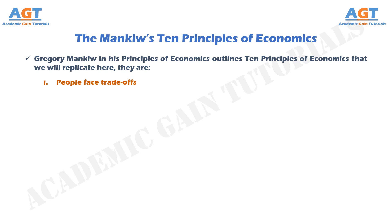Principle No. 2: The cost of something is what you give up to get it. Because people face trade-offs, making decisions requires comparing the costs and benefits of alternative courses of action. In many cases, the cost of some action is not as obvious as it might first appear. The opportunity cost of an item is what you give up to get that item. When making any decision, such as whether to attend college, decision makers should be aware of the opportunity costs that accompany each possible action. College-age athletes who can earn millions if they drop out of school and play professional sports are well aware that their opportunity cost of college is very high. It is not surprising that they often decide that the benefit is not worth the cost.